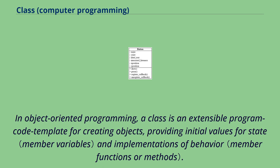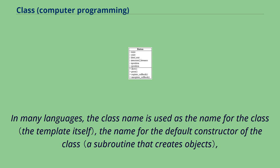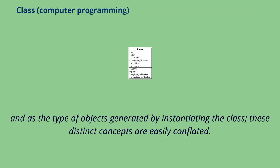In object-oriented programming, a class is an extensible program code template for creating objects, providing initial values for state and implementations of behavior. In many languages, the class name is used as the name for the class, the name for the default constructor of the class, and as the type of objects generated by instantiating the class. These distinct concepts are easily conflated.